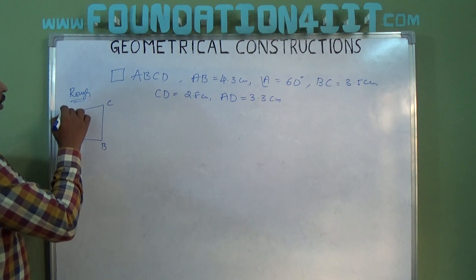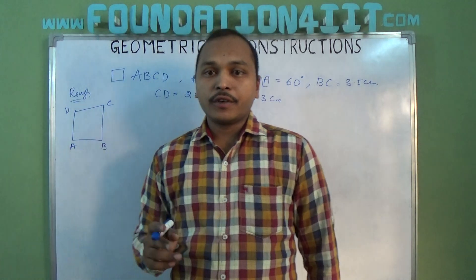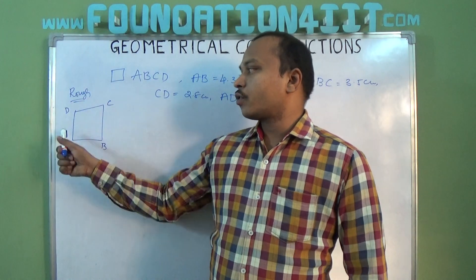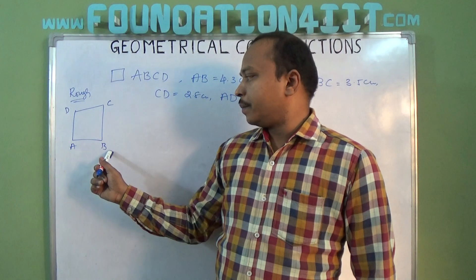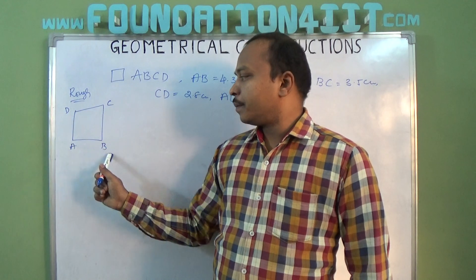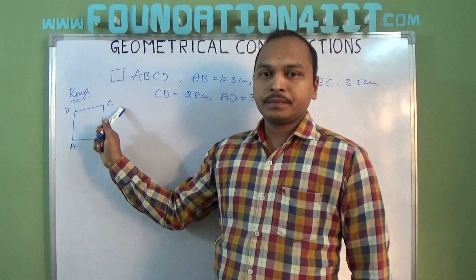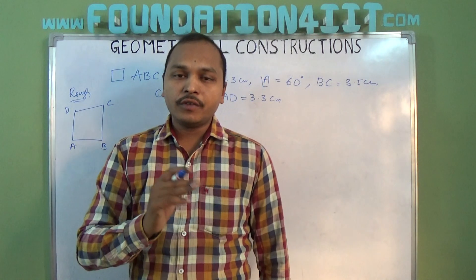An important thing: when you are denoting the vertices, either clockwise or anticlockwise only we need to write. This is very important. If you write A, B should be C here, not A, B and then D. A, B, C, D clockwise or anticlockwise only.